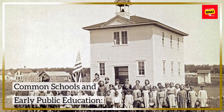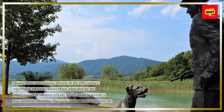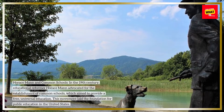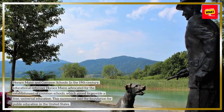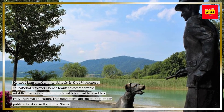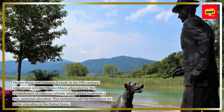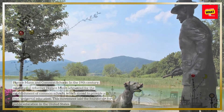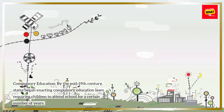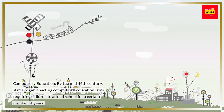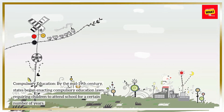Common schools and early public education. In the 19th century, educational reformer Horace Mann advocated for the establishment of common schools, which aimed to provide a free, universal education. This movement laid the foundation for public education in the United States. By the mid-19th century, states began enacting compulsory education laws, requiring children to attend school for a certain number of years.